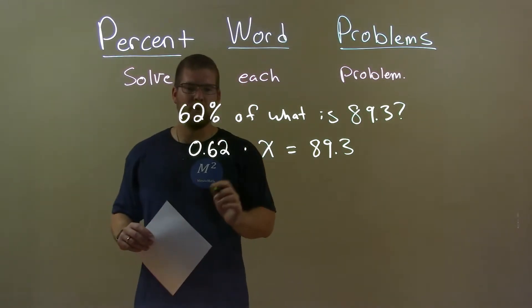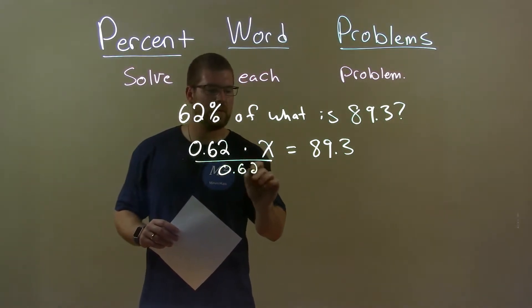Now we solve for x. Well, opposite of multiplication is division. Divide by 0.62 on both sides.